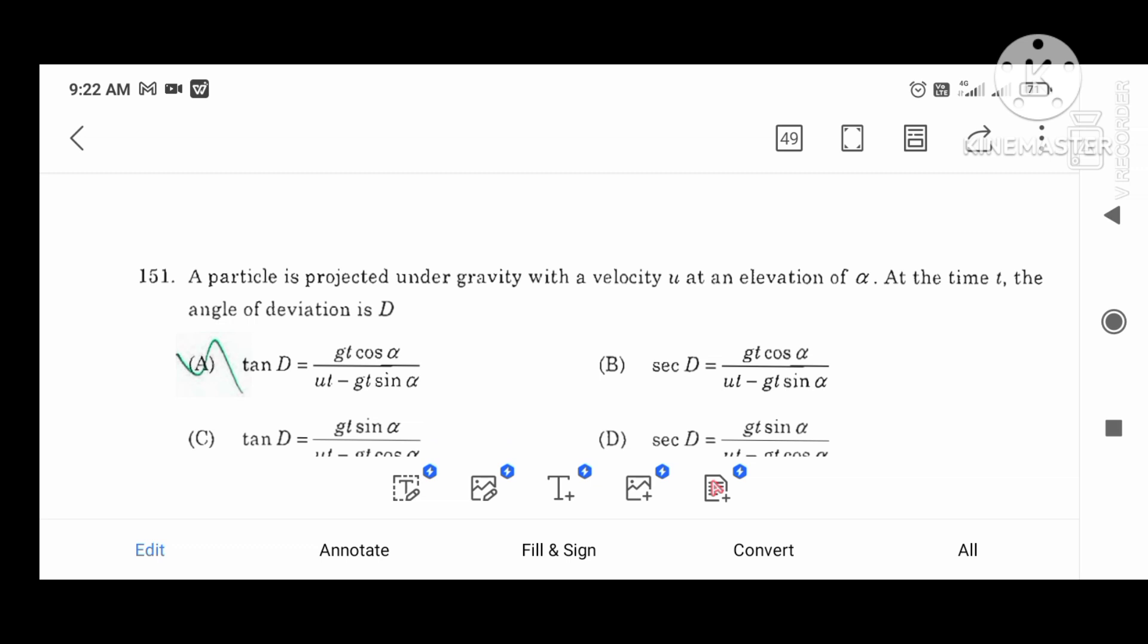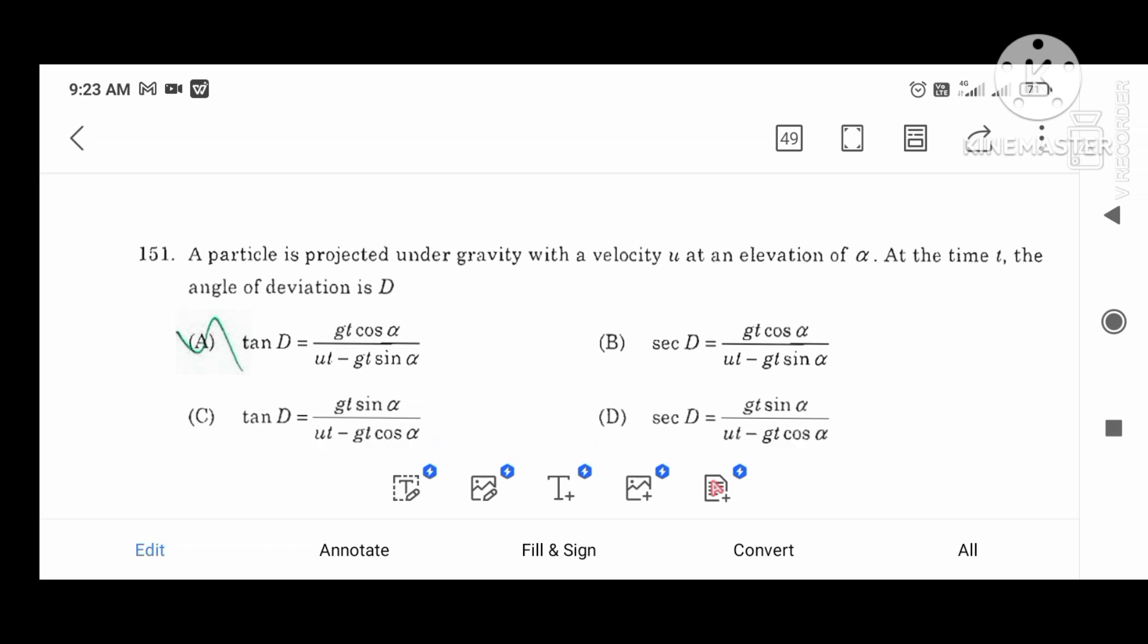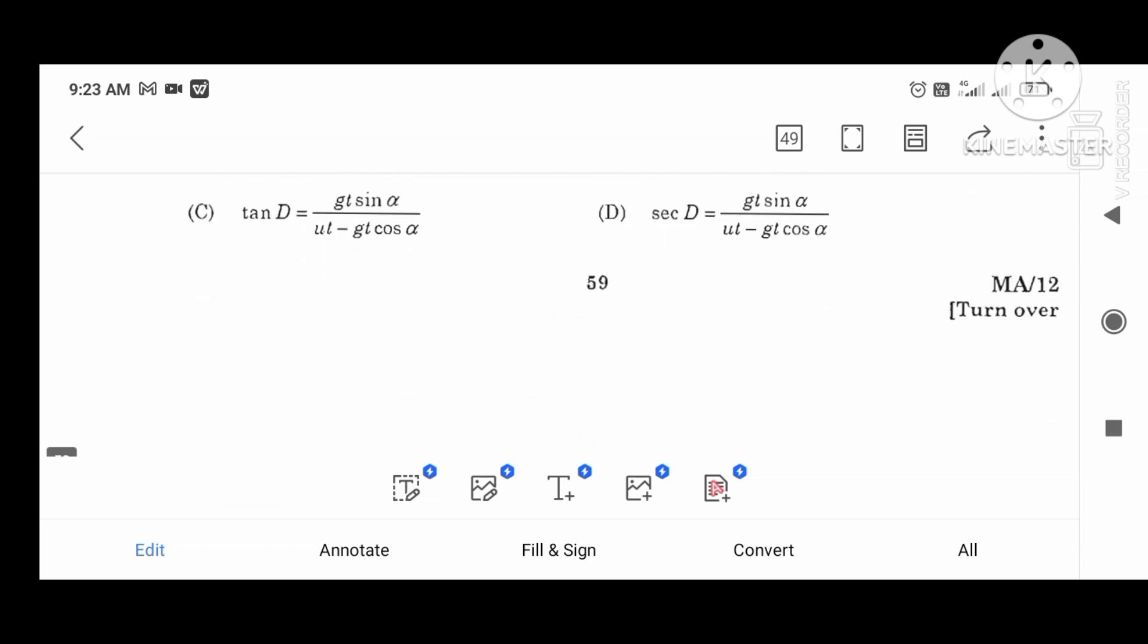A particle project under the gravity and the velocity evaluation, the angle deviation D equal to. That is the answer. This is the last question.